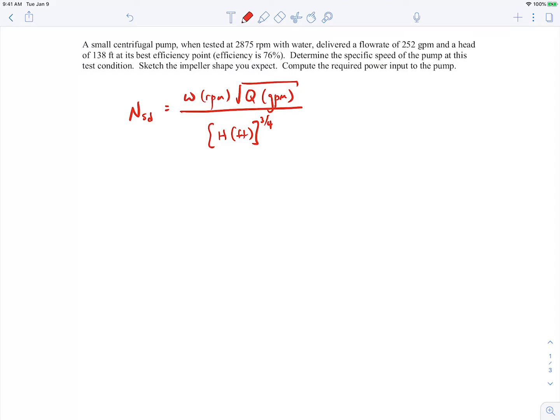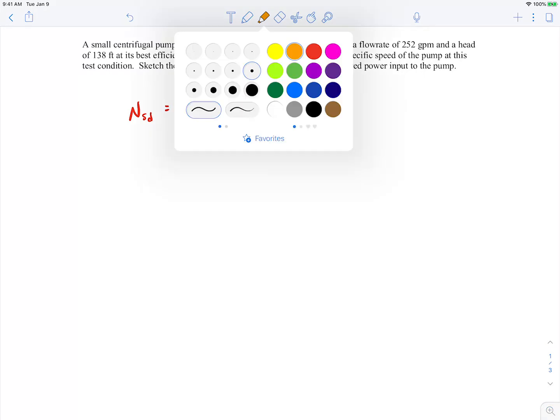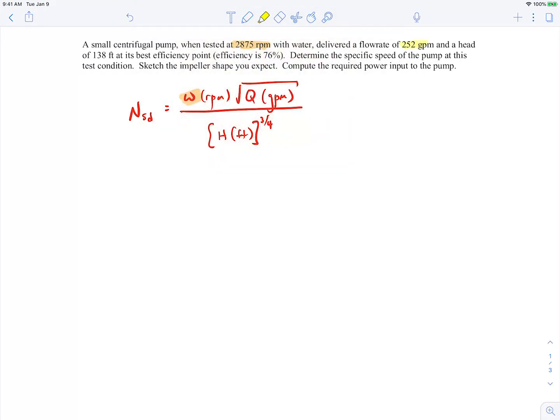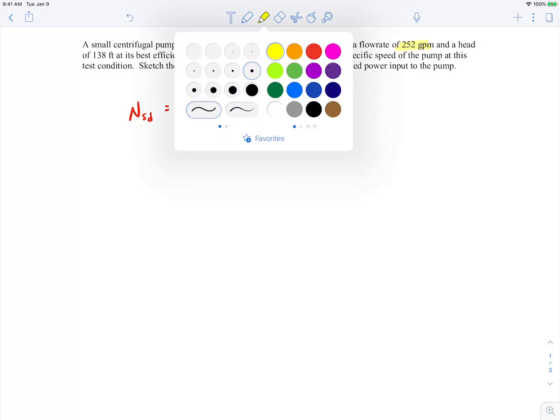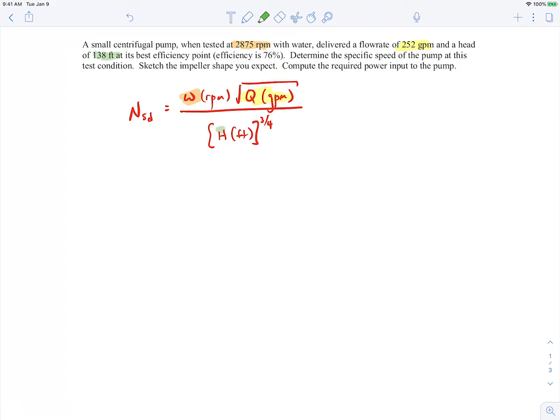We can go ahead and plug in the values here. We're given the rotational speed in RPM, that's this one. We're given the flow rate, that's this one, in the correct units. And then we're also given the head rise in the correct units, so that's that one. When you plug the numbers in, you'll get that the dimensional specific speed is 1,130 RPM gallons per minute to the one-half feet to the minus three-quarters. It's an unusual set of units.